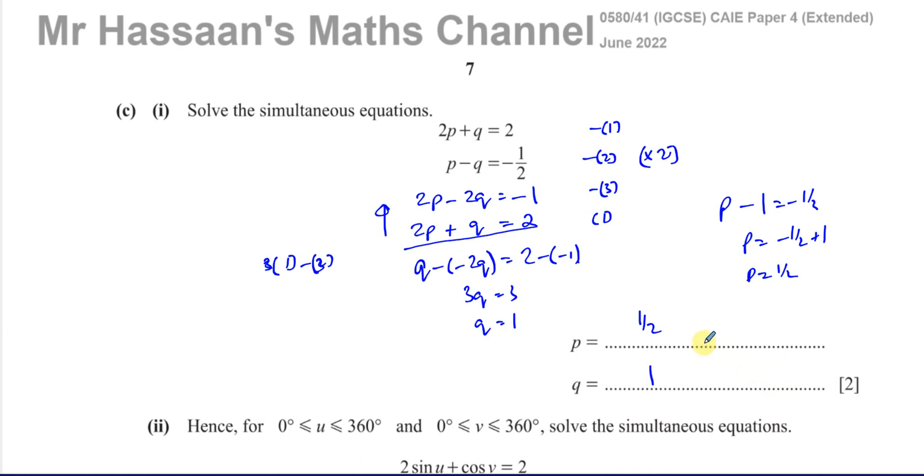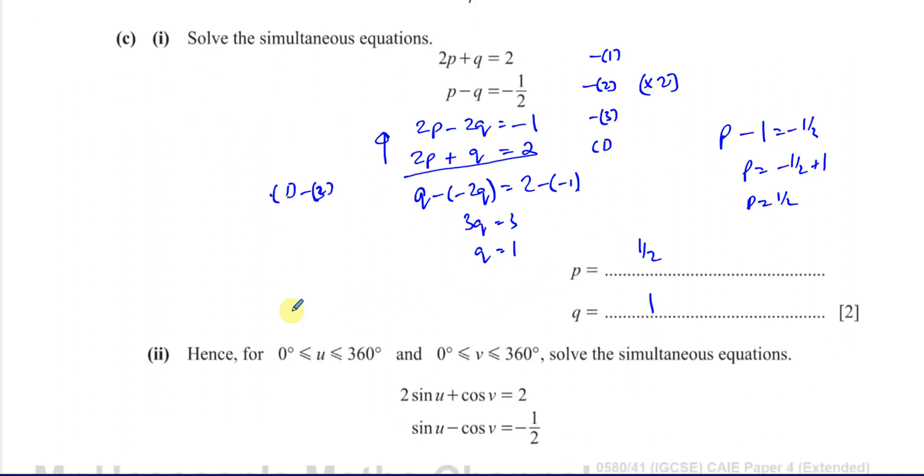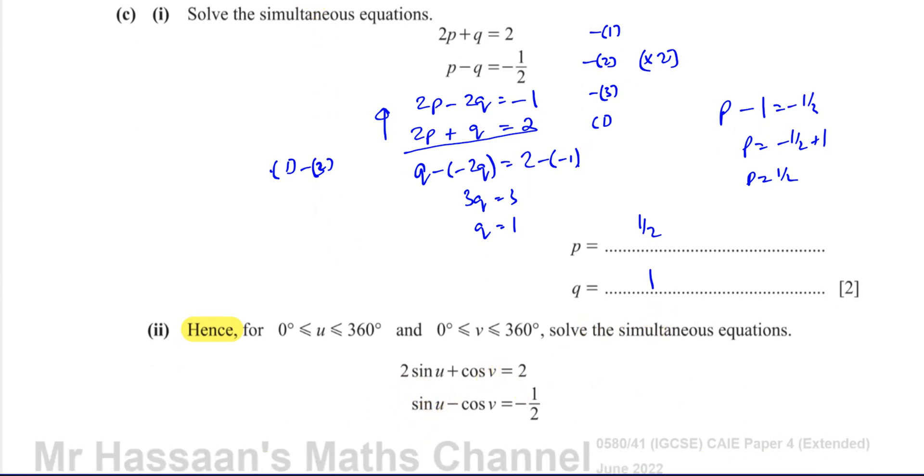So we know those two answers are correct. That's just solving a pair of simultaneous equations. You must show your steps so the examiner knows you didn't just use a calculator. Now for part 2, it says hence. A very important word—it means using your answers from the previous part. Solve for u between 0 and 360 degrees and v between 0 and 360 degrees.